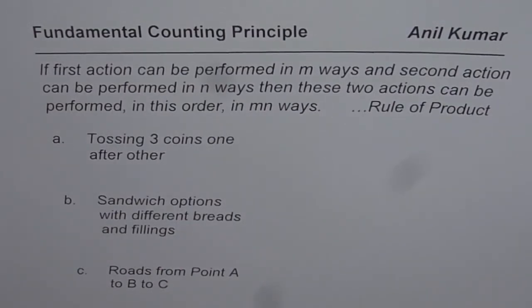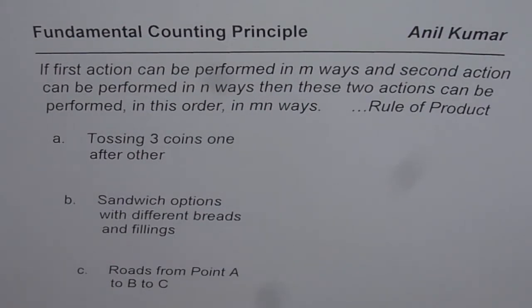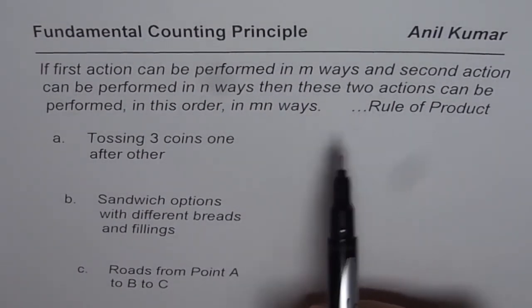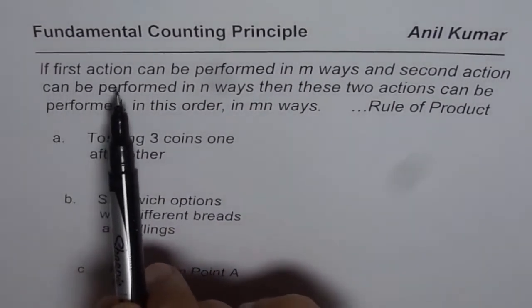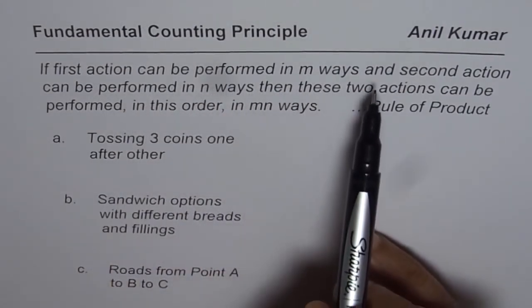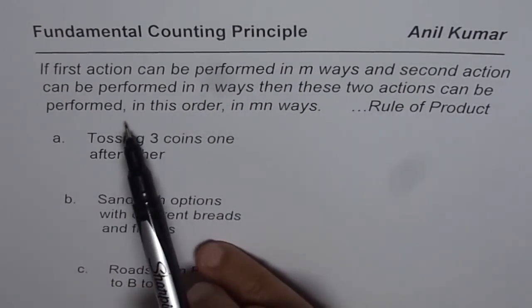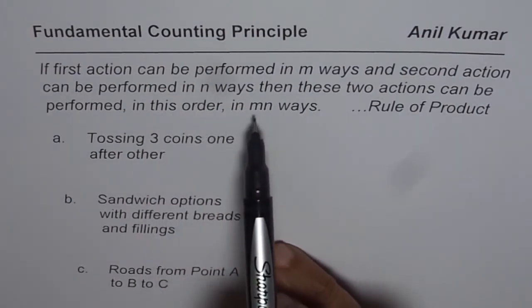I am Anil Kumar and in this video I will discuss fundamental counting principles. For those of you who will be doing probability, this video could be a very important one. With the help of this principle, you can count the possibilities for actions to take place one after another. The definition is: if a first action can be performed in m ways and a second action can be performed in n ways, then these two actions can be performed in this order in m times n ways.